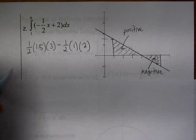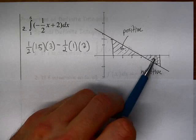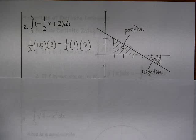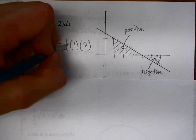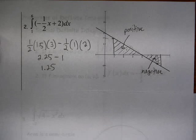All right, so when we simplify that, we can find the area of this area minus that area. So we get 2.25 minus 1, so 1.25.